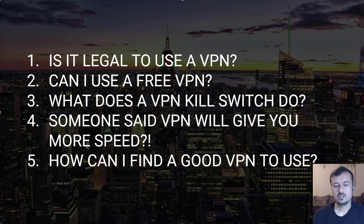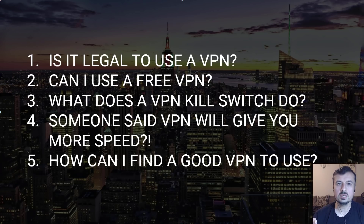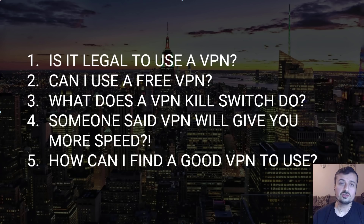Next: what does a VPN kill switch do? As the name implies, on certain VPNs you can set up a kill switch, which means if your VPN connection is terminated for any reason, it can either shut off your internet connection entirely or terminate a specific program. For example, if you're using a torrent client, you can configure the kill switch so that client can only run while the VPN is active. If the VPN stops, the application is terminated, guaranteeing you never access it without VPN protection.